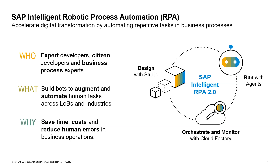We've enhanced cooperation between these groups so it's easier to work together. For example, a business process expert or citizen developer can start building the bot, and an expert developer can add functionality where coding is needed. What we do with an RPA tool is the same as before: we build bots to augment and automate human tasks, independently from line of business or industry. We provide this RPA functionality for every LOB and industry. The goal is to save time and cost, reduce human errors in business operations, enable employees to do more productive tasks with higher value, and reduce the tedious tasks of simply copying data from A to B.